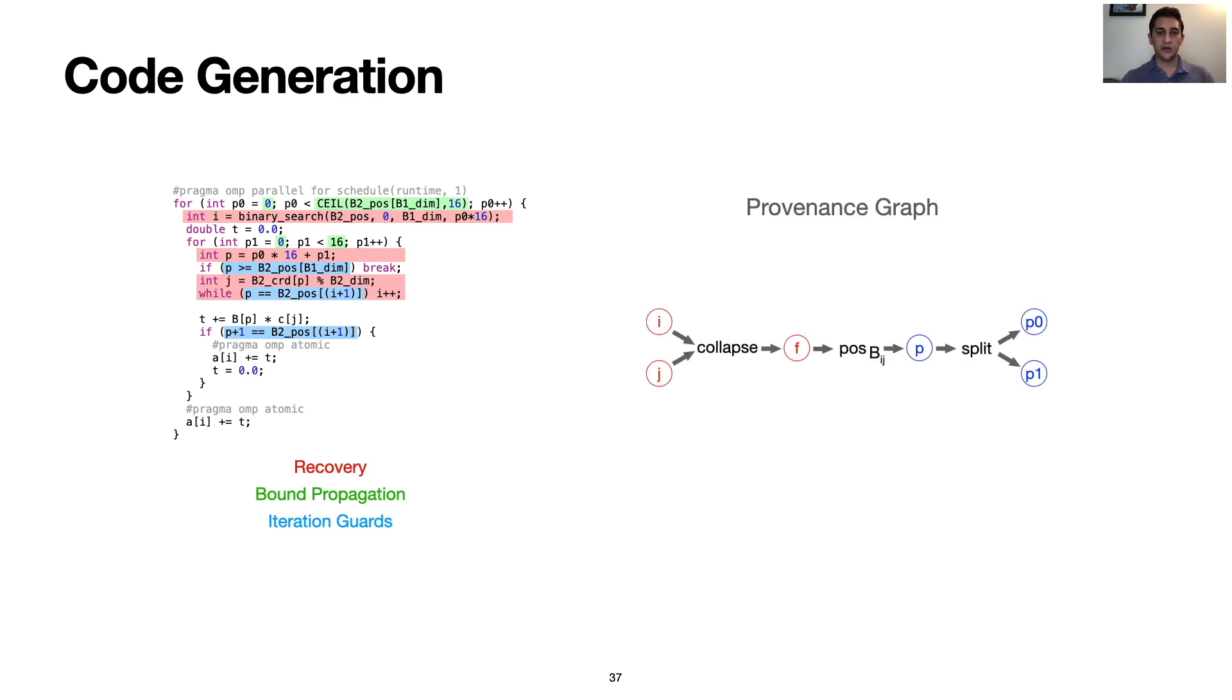To generate each of these components, we maintain the relationship between transformed iteration variables in a structure called a provenance graph. We can then generate code by traversing this graph. For example, during recovery we apply a function defined per transformation that propagates known values on the right of the graph through adjacent functions to determine unknown values on the left of the graph. These functions are provided in the paper.